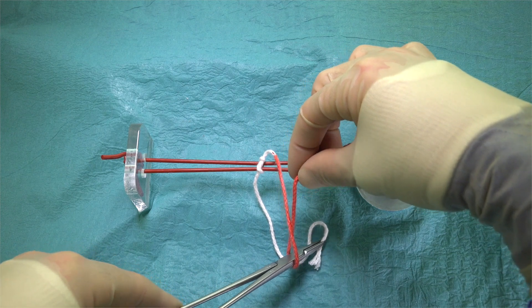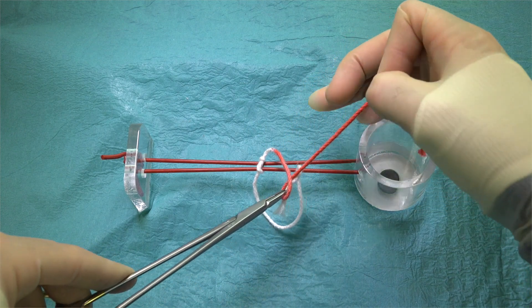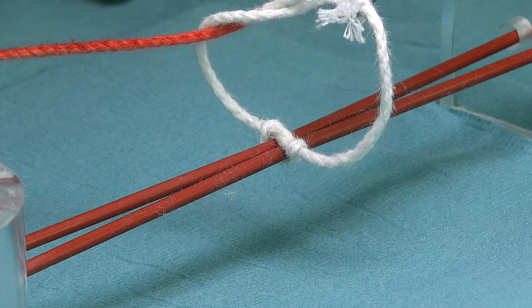The instrument is then used to pick up the suture end lying closest to us, and pull it through the loop, taking it away from us in the process.